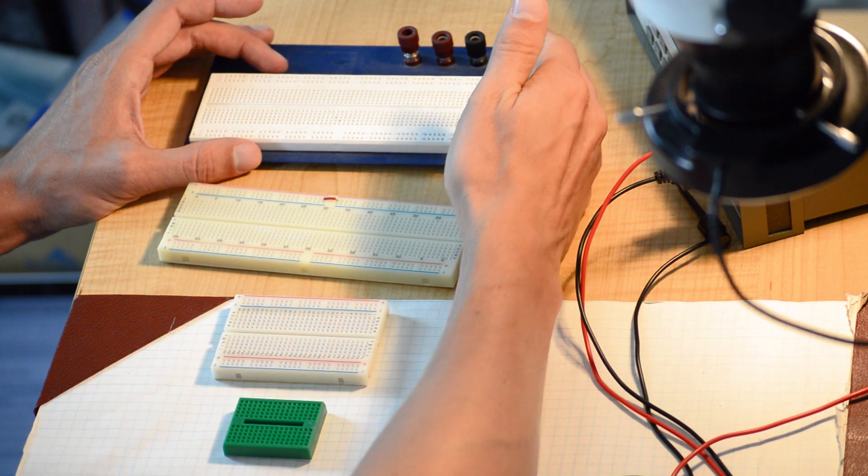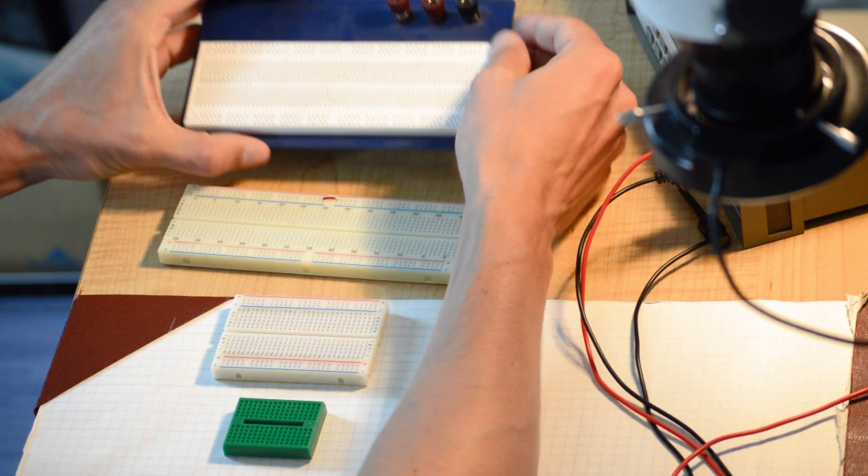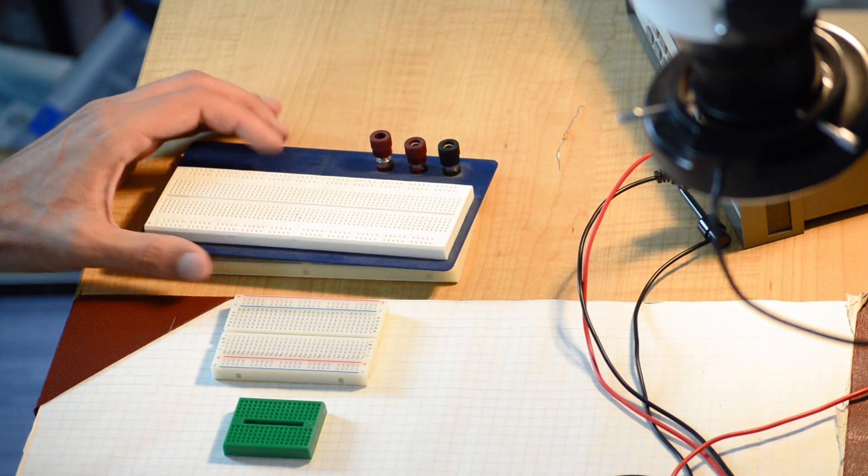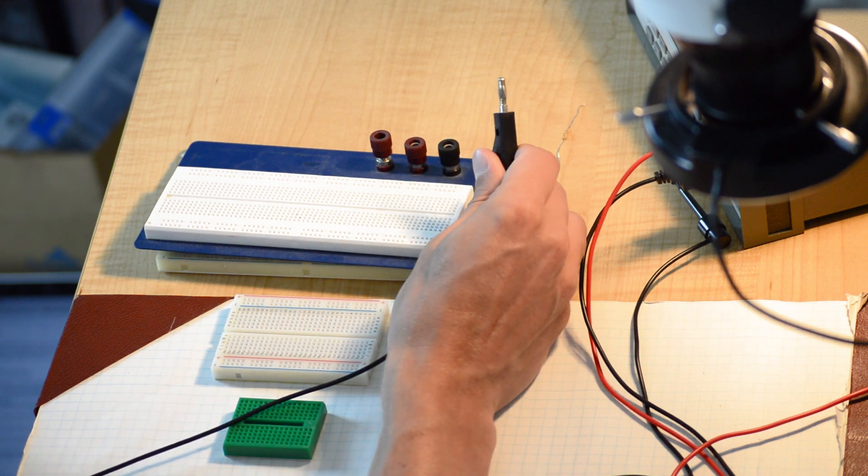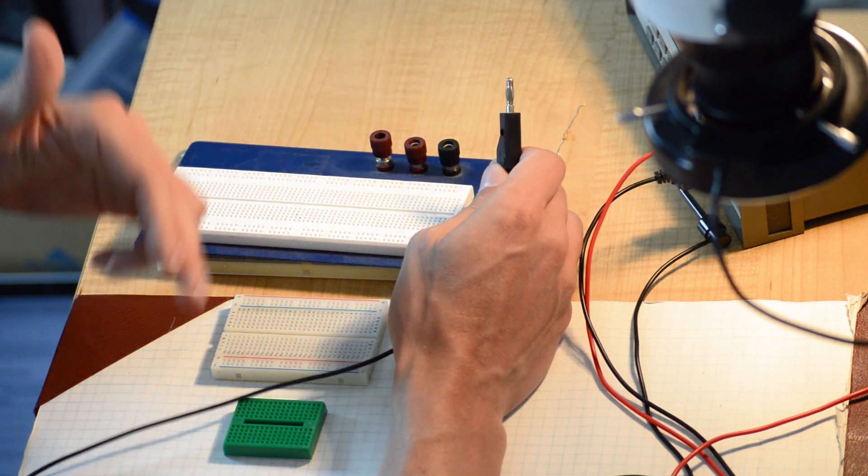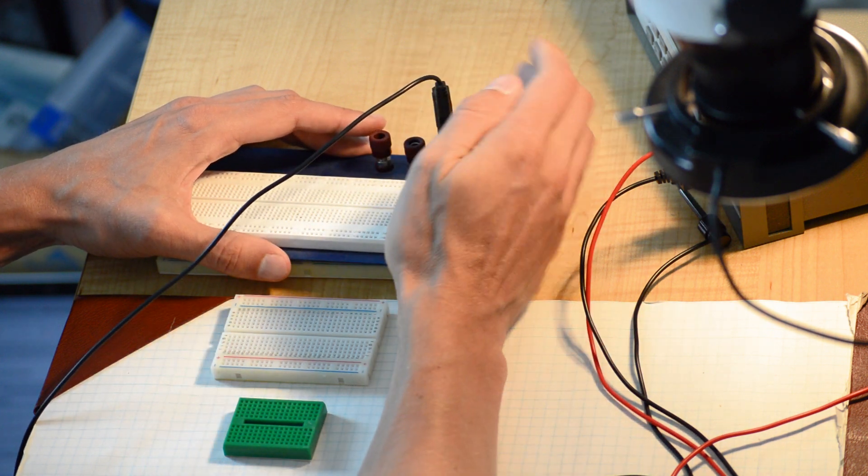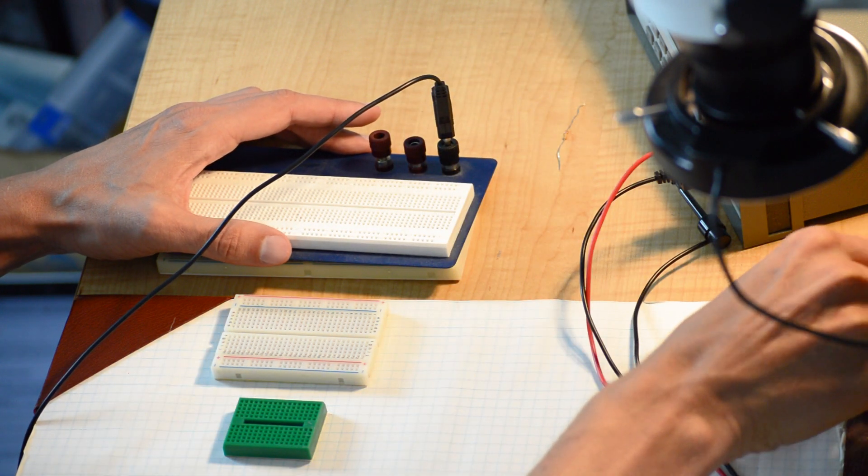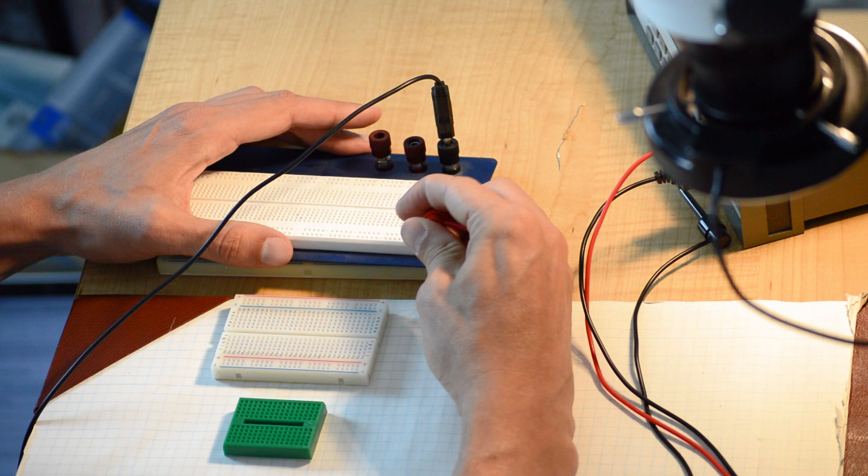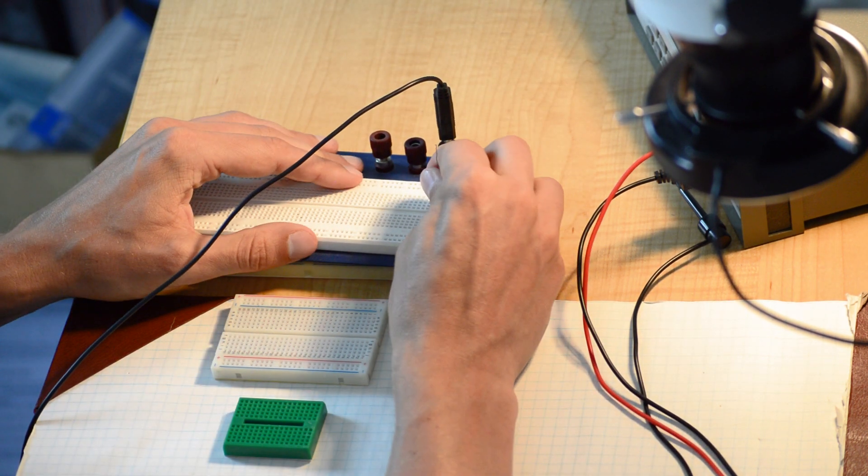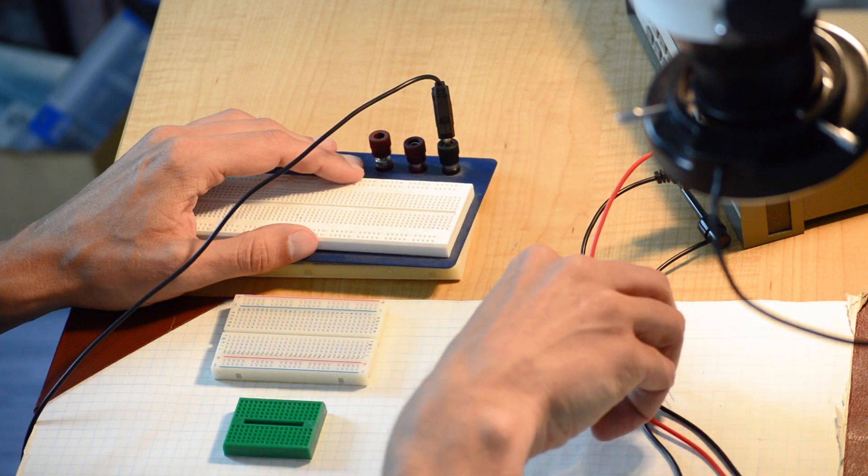Another thing you'll notice on these is you have a couple of spots right here. And if you look closely, you can actually tell that they are suited specifically for banana plugs. And so this is to be able to bring power from your power supply without any problems. You just go and plug it in, and that way you're not dealing with these hooks right here and trying to get connections on here and plugging it in.